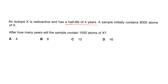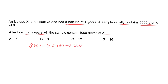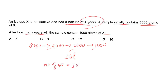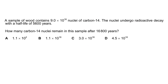In Question 7, the half-life of radioactive X is 4 years and the initial count is 8,000 atoms. To find when 1,000 atoms remain: 8,000 → 4,000 → 2,000 → 1,000. That is three half-lives. The total time required is 3 × 4 = 12 years. The answer is C.